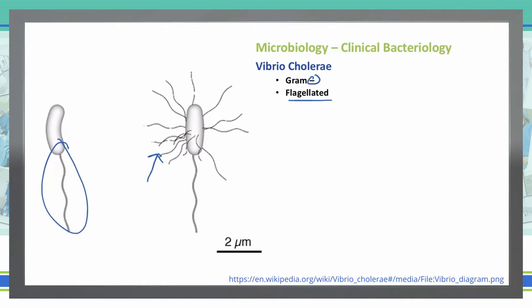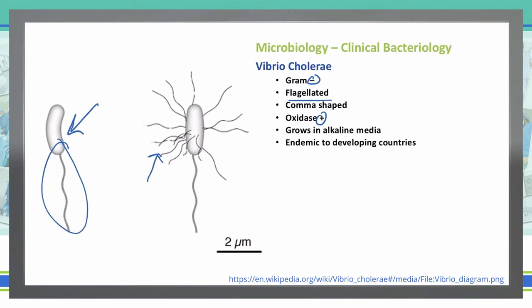The shape of Vibrio cholera is going to be comma-shaped, as you can see in this picture. It is oxidase positive, and it will grow in an alkaline media. Typically, Vibrio cholera is found in developing countries, oftentimes in a contaminated water source.